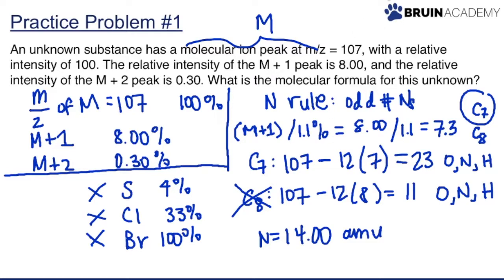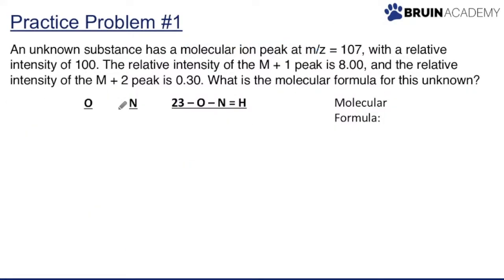Moving to the next slide, we use a table to figure out how many oxygens and hydrogens we can expect. We vary the number of oxygens and use trial and error. We know N must be an odd value — so we have an odd number of nitrogens. The table shows number of oxygens, and a formula to determine remaining hydrogens.